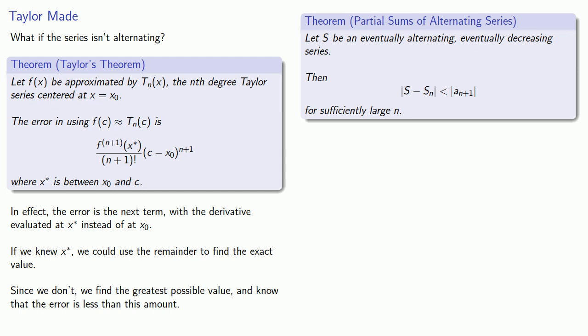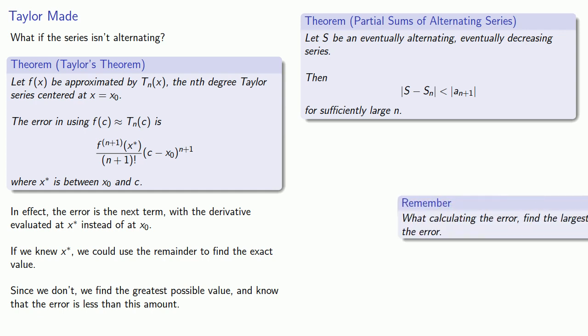This leads to the following idea which is somewhat counterintuitive. When calculating the error what we want to do is find the largest possible value of the error. We want to in general overstate the actual error. This seems counterintuitive because don't we want to get an accurate approximation? And the answer is yes, but we also want to not lie.